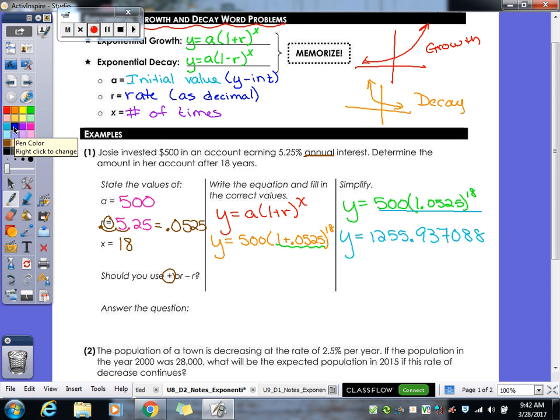Now this is the kind of problem where they're not going to tell you where to round, but we're dealing with money. How many numbers after the decimal can we have? 2. So that means I'm going to round to the 3, but this 7 makes the 3 turn to a what? 4. So it would be $1,255.94. So to answer the question, Josie will have $1,255.94.